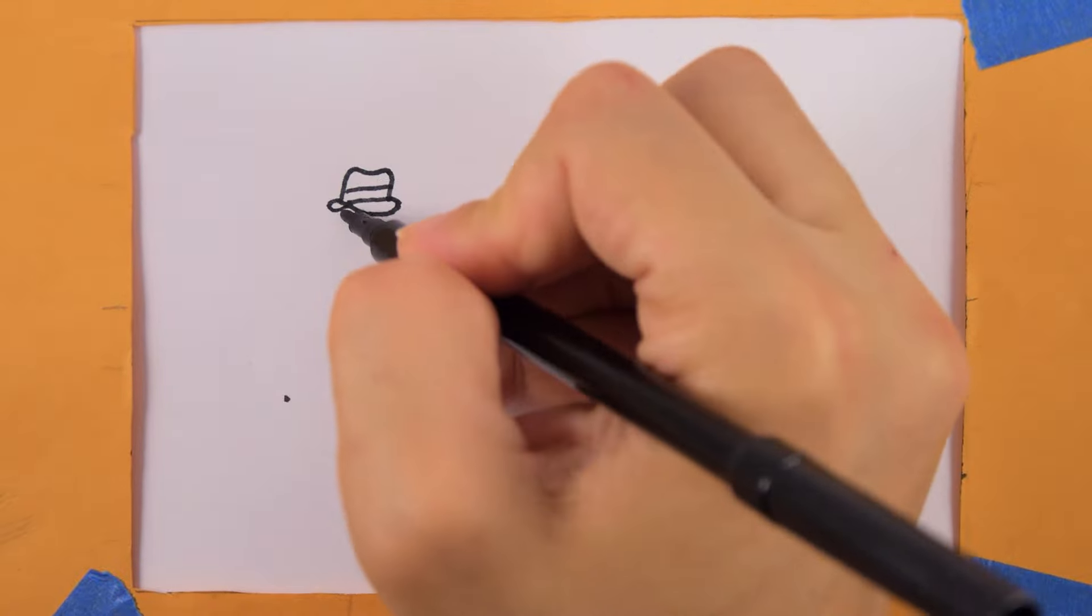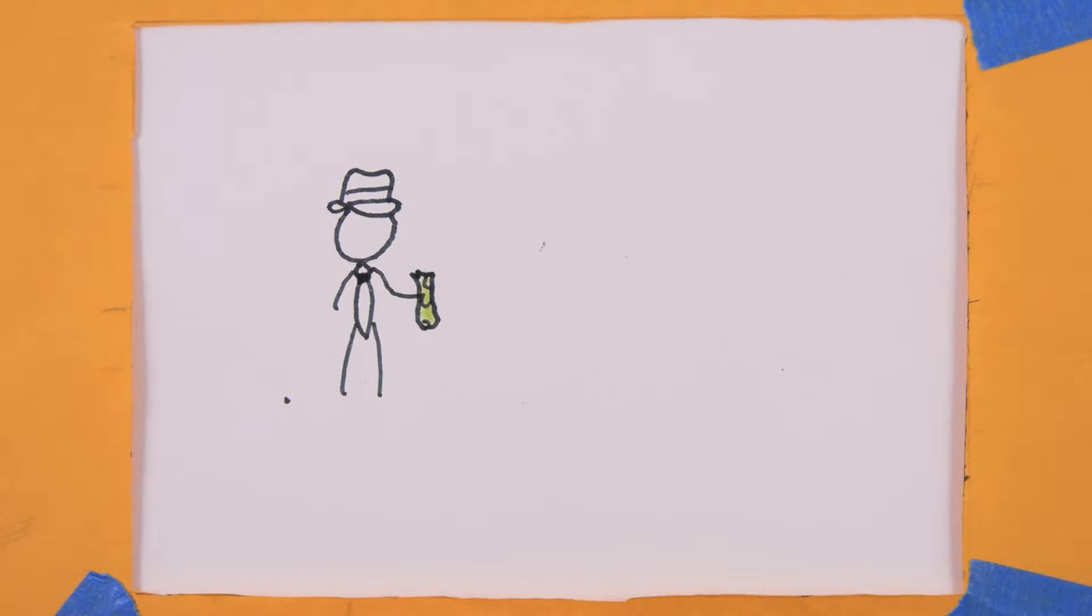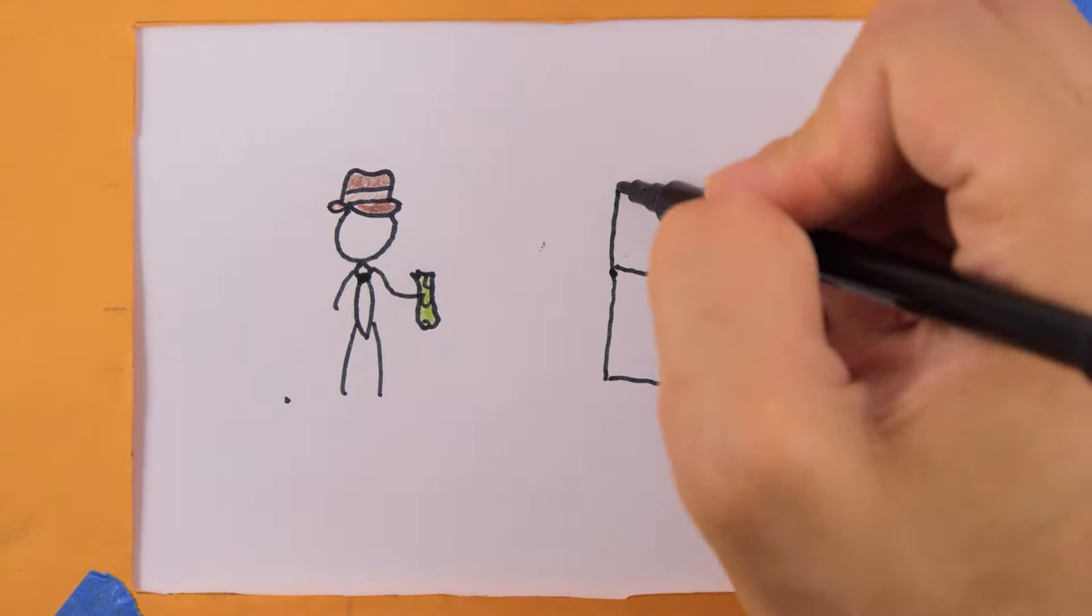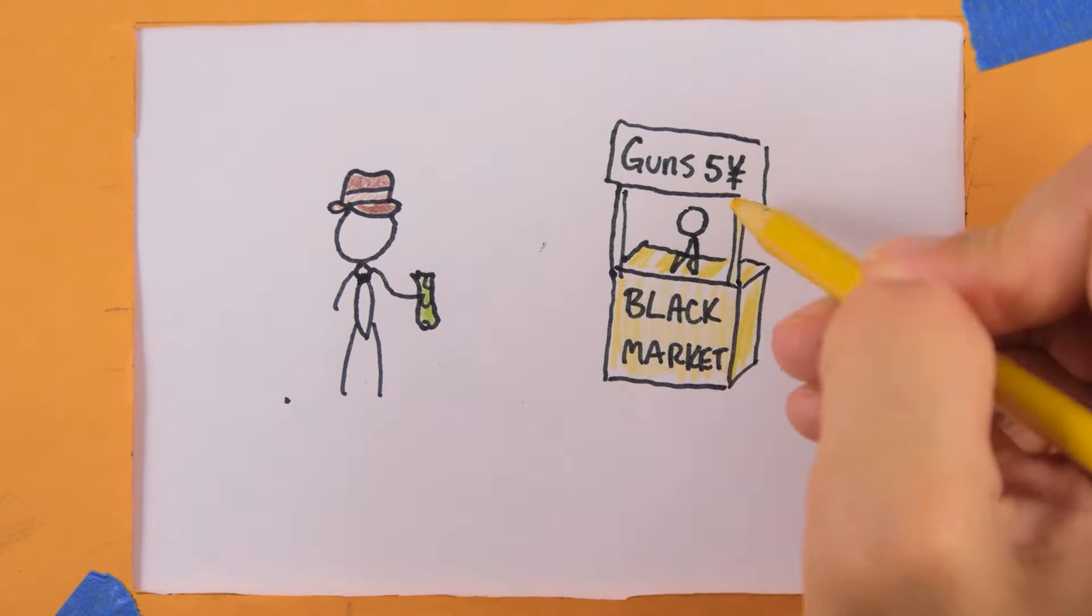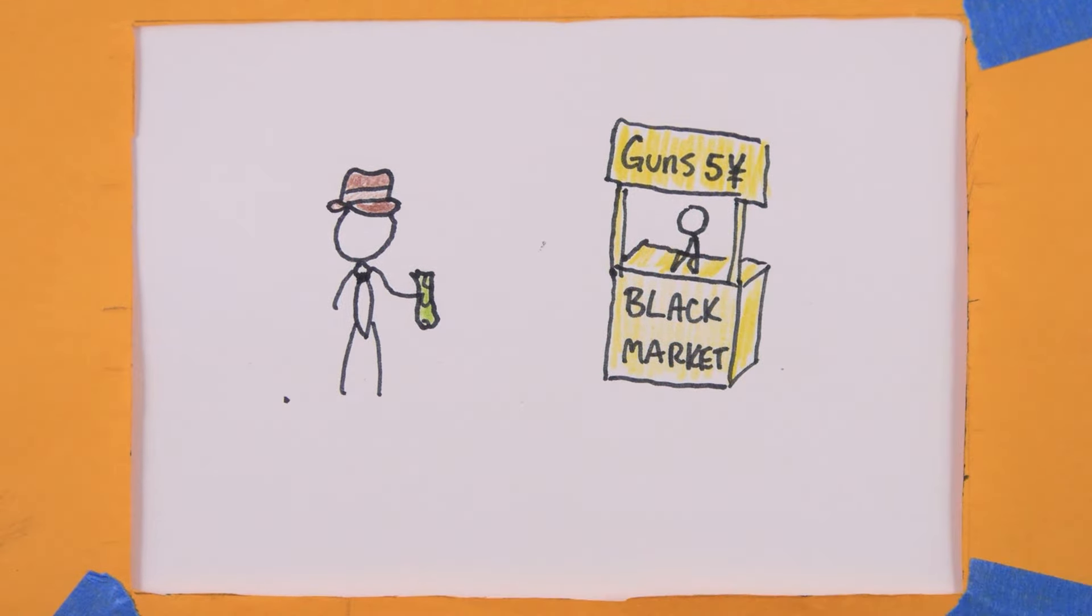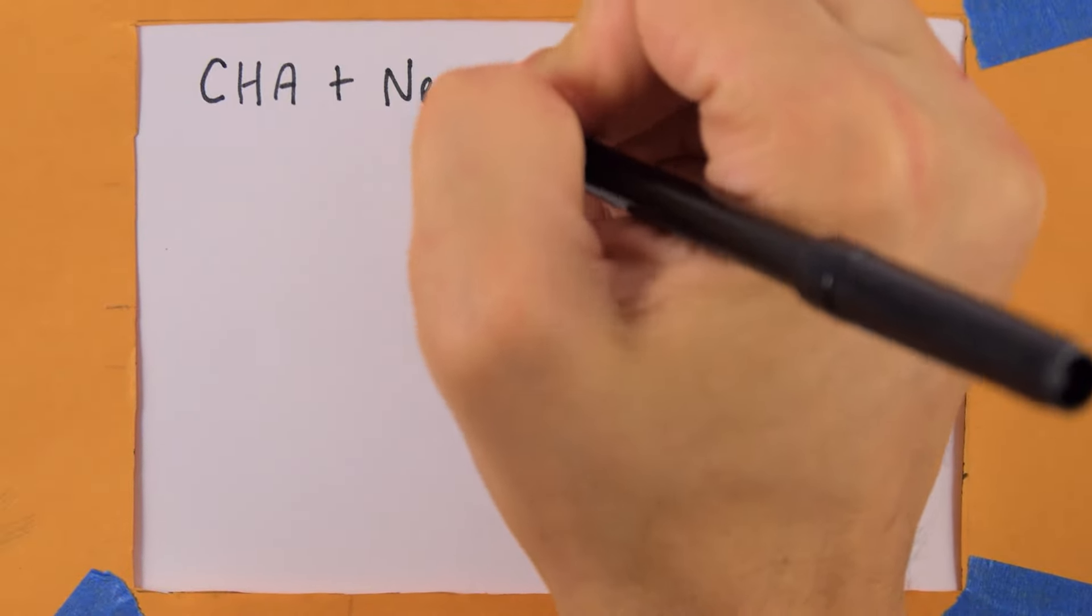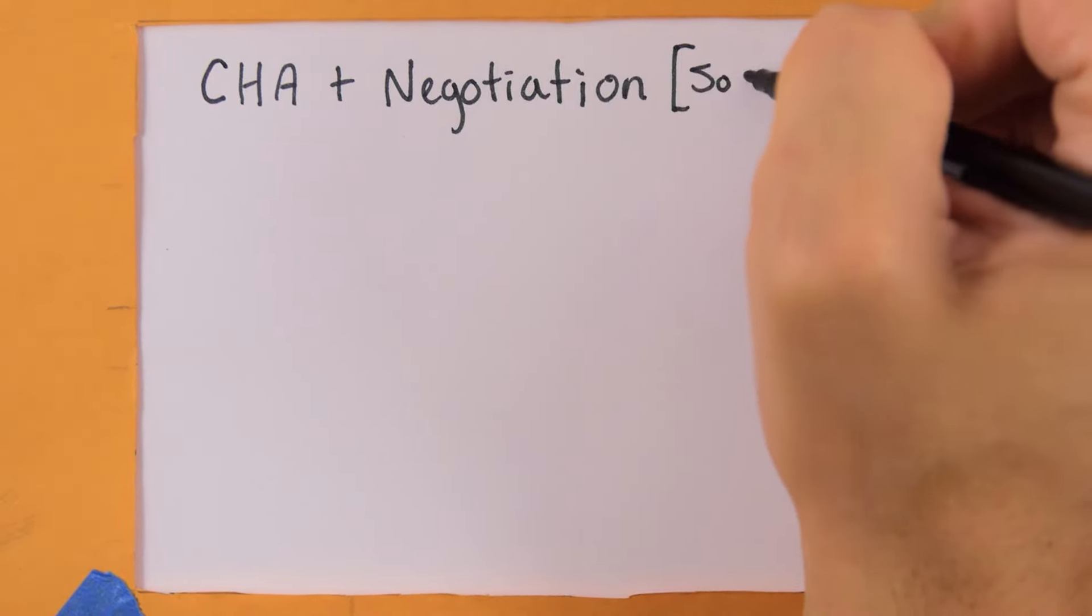First, let's talk about buying it yourself. If you're charismatic, your best bet might be to hit the pavement yourself to buy the gear. The Shadowrun setting is full of black market bazaars and runner hangouts if you know where to look. Make a charisma plus negotiation skill check using your social limit.